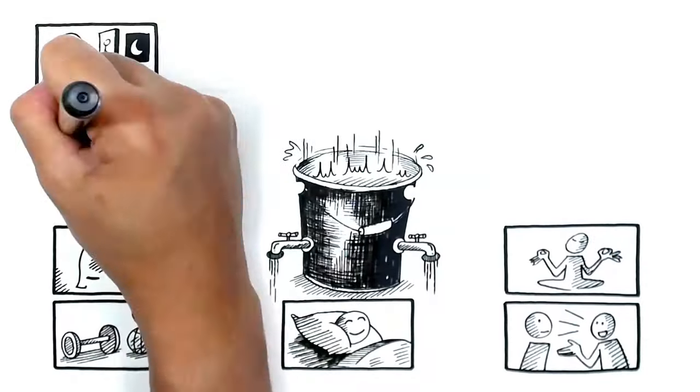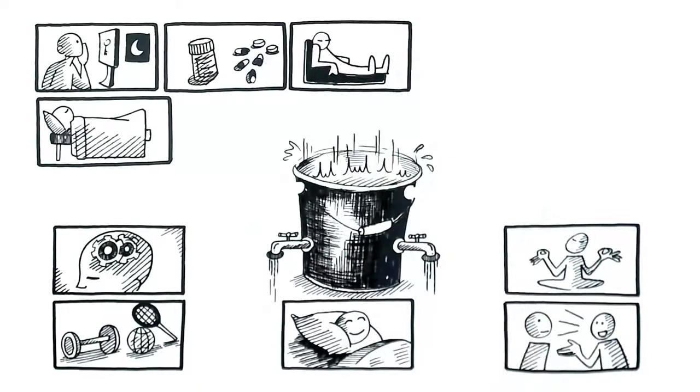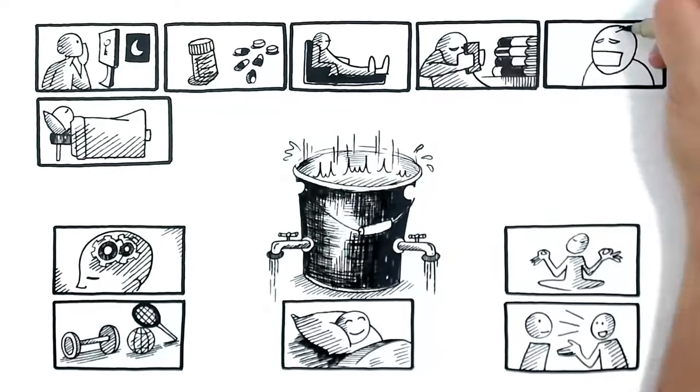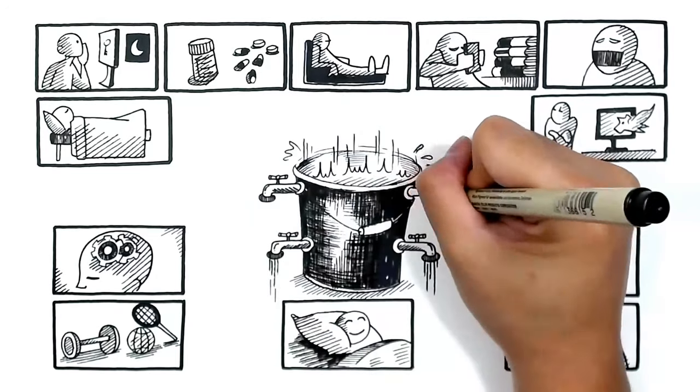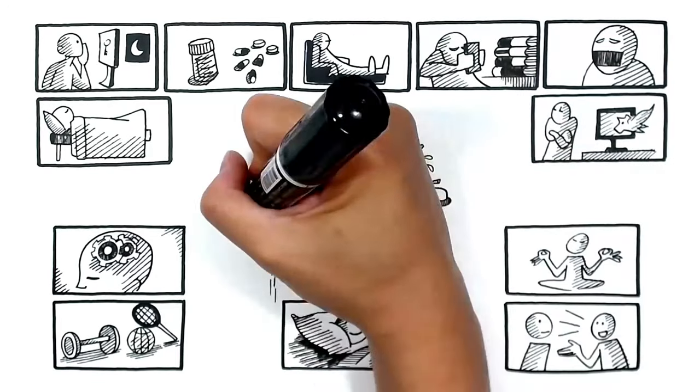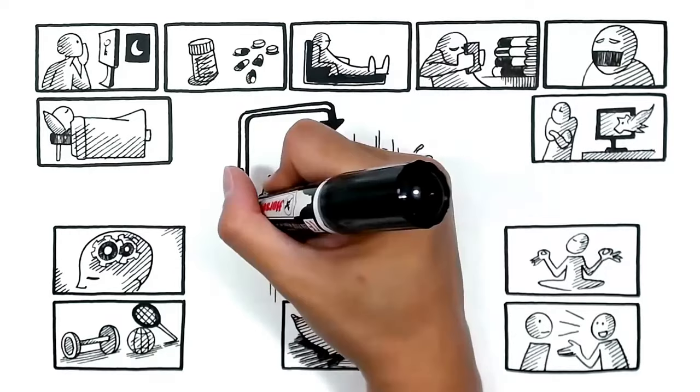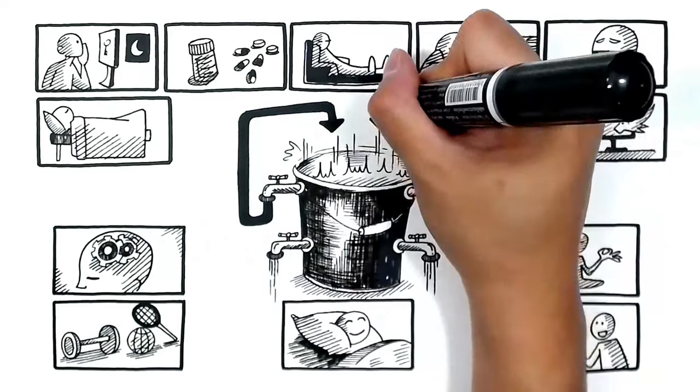Staying up late, sleeping in, drugs, inactivity, procrastination, suppressing or ignoring problems are examples of unhelpful coping strategies or false taps. They might give temporary relief, but actually result in water flowing back into your bucket.